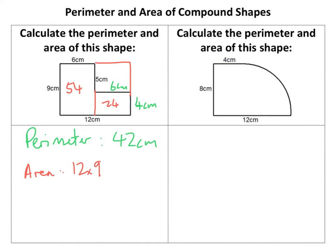So I personally do 12 times 9 minus 5 times 6. Now this is the 5 times 6 bit here, alright, and that equals 78cm squared. It's an area, isn't it? So there you go. Now let's have a look at the perimeter here.